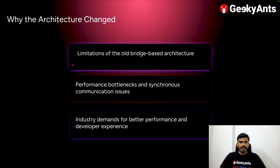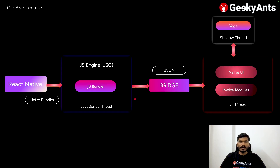Let's understand first why the old architecture has been changed. The old architecture is based on a bridge-based design, which has some limitations. Due to these, it has performance bottlenecks and issues with synchronous communication, causing app performance to be slow. The industry and developers wanted a new architecture and a better development experience.